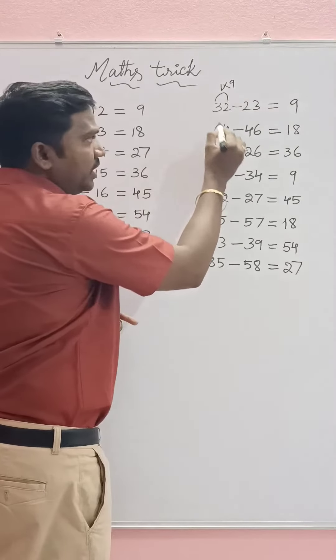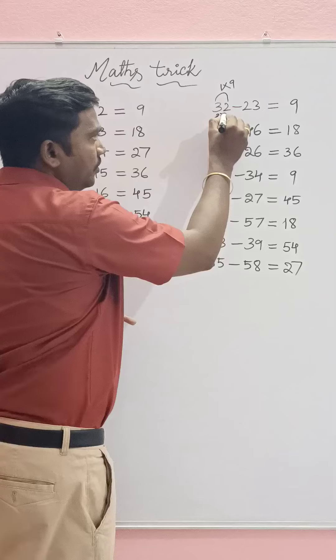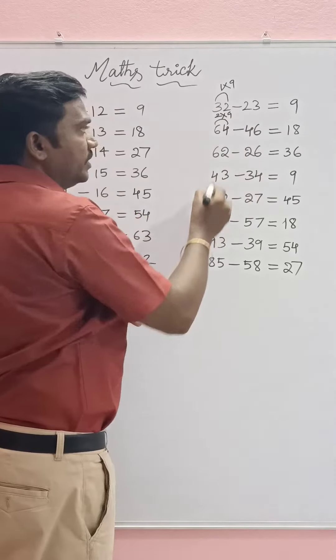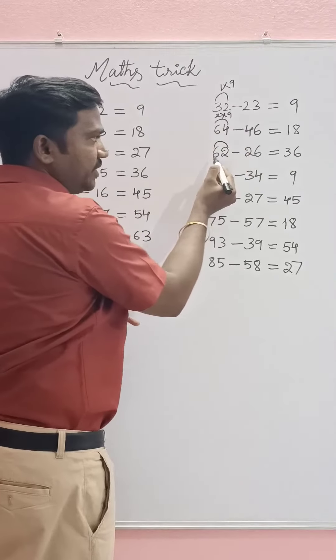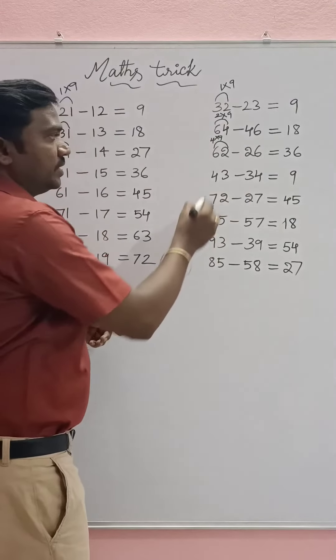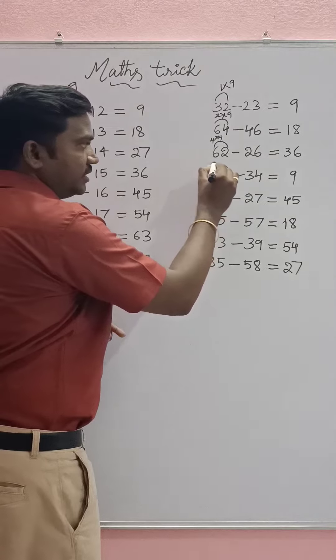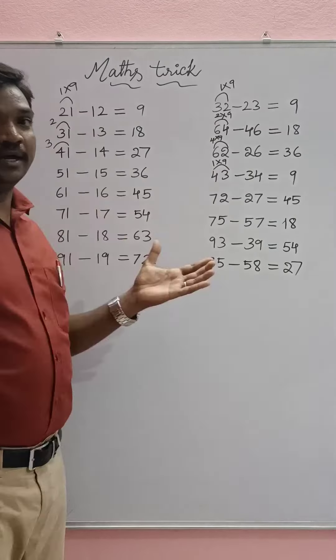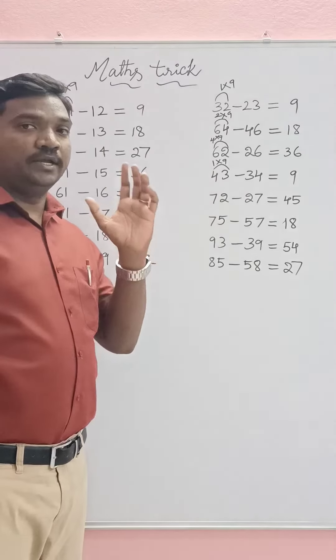The difference between 6 and 4 is 2, 2 times 9 is 18. Here the difference between 6 and 2 is 4, 4 times 9 is 36. Here the difference between 4 and 3 is 1, so 1 times 9.